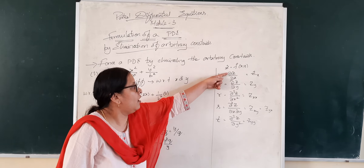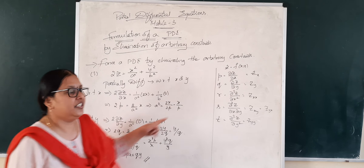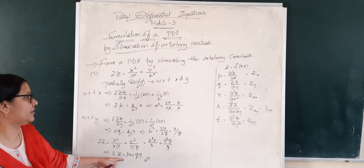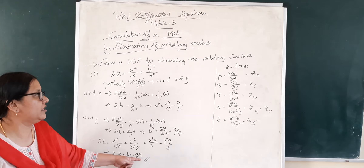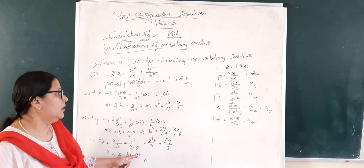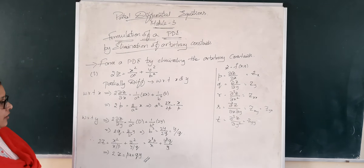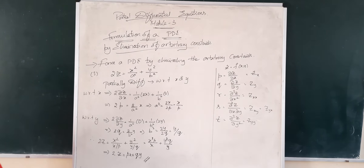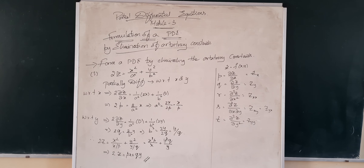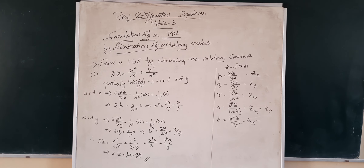Therefore this particular equation, 2z equals px plus qy, can be treated as a partial differential equation because it is involved with the partial derivatives dou z by dou x and dou z by dou y. This is how we can frame a PDE by eliminating the arbitrary constants.